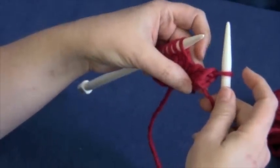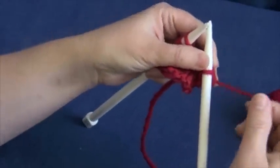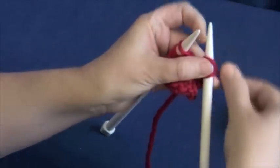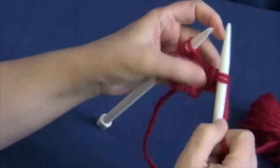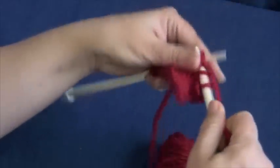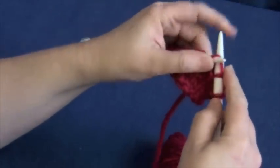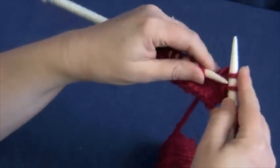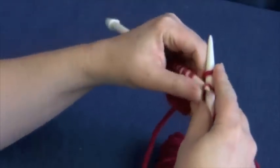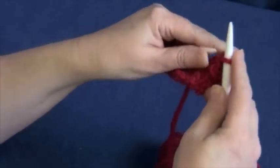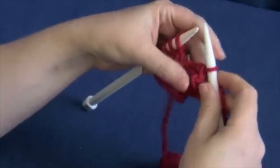Now the trick to a stretchy bind off is how much yarn you put into the bind off, and this has a lot of extra yarn. So once again, we're going to do a yarn over, knit, pull the yarn over over the top, and then pass that first stitch over the top as well.